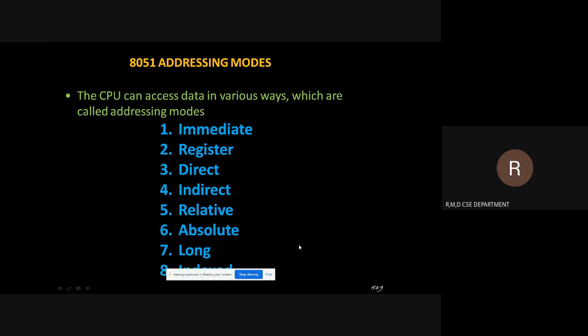Totally there are eight types of addressing modes: immediate addressing mode, register addressing mode, direct addressing mode, indirect addressing mode, relative, absolute, long, and indexed addressing modes. So totally we are having eight addressing modes.